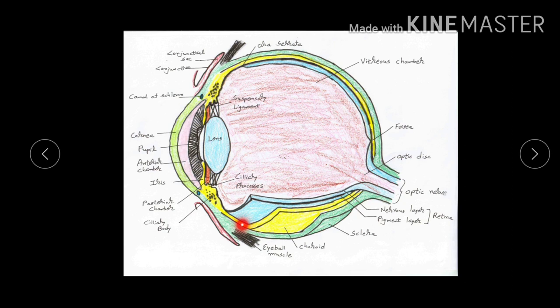The cornea is avascular, transparent, and colorless in structure, lying in junction with the sclera. This point is known as the corneoscleral junction or the limbus.